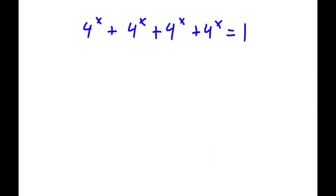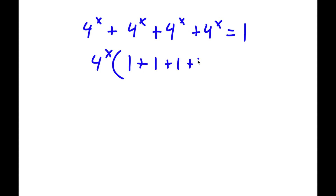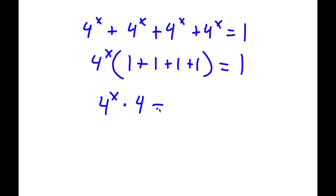Alright, so I have 4 to the power of x, plus 4 to the power of x, plus 4 to the power of x, plus 4 to the power of x, is equal to 1. Now because all terms on the left-hand side are 4 to the power of x, I'm going to factor out 4 to the power of x. So I have 4 to the power of x times — since anything divided by itself is 1, I get 1 plus 1 plus 1 plus 1 inside. Simplifying: 1+1=2, 2+1=3, 3+1=4. So I have 4 to the power of x times 4 is equal to 1.